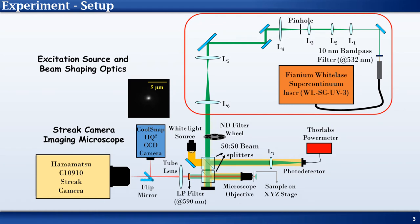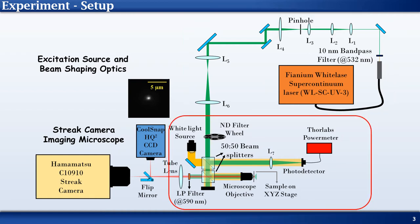On the top right, we have the Fianium supercontinuum laser system and the beam shaping optics which magnify the beam. We use a 10nm bandpass filter to extract a 532nm source. In the entrance to the second area, we have a computer controlled neutral density filter wheel for adjusting the laser power. The beam splitter pair help couple both white light and the laser in between the objective and the tube lens of the microscope.